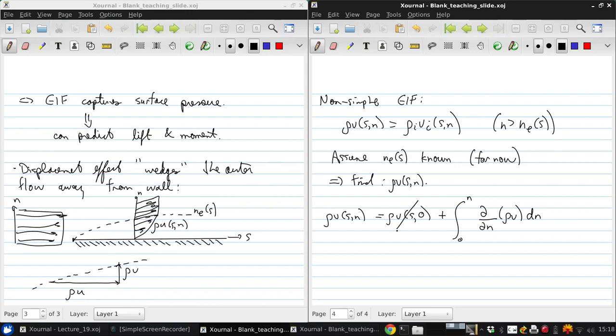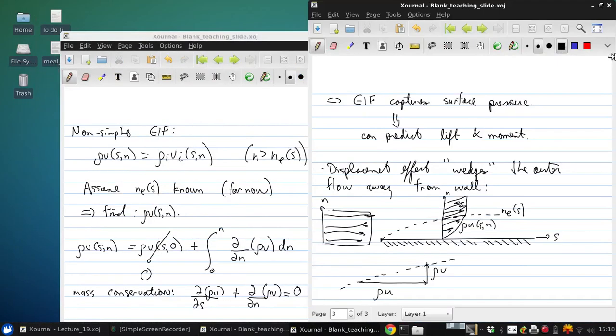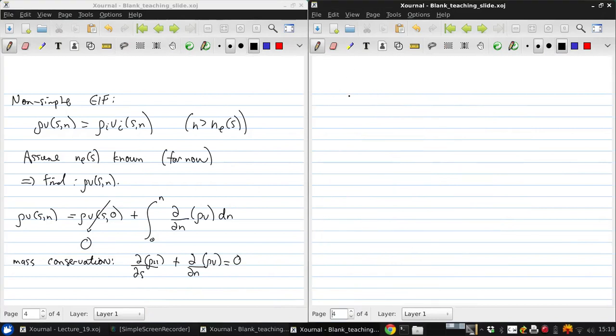This first term must be 0 from the no-slip condition, because the velocity must be 0 at the wall. So we can transform the second term, since for an incompressible flow of mass conservation, it says that ∂/∂s (ρU) plus ∂/∂n (ρV) equals 0.